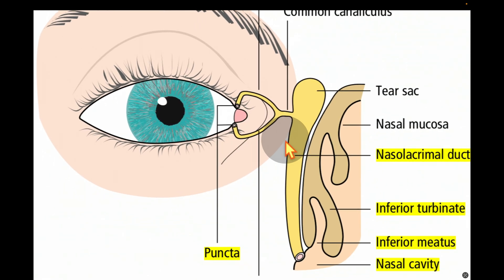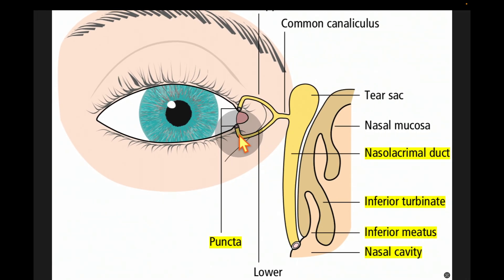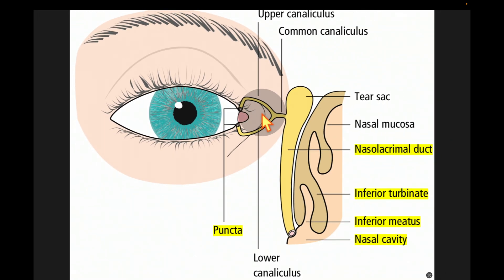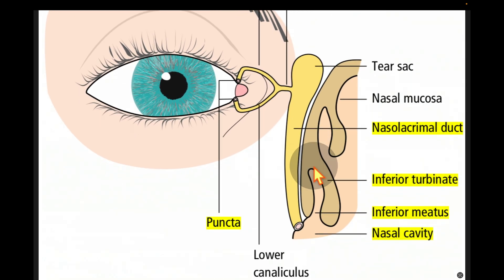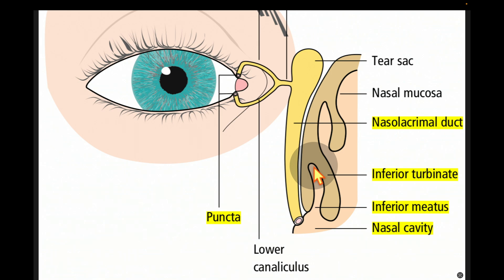The lacrimal drainage system works as follows: tears drain into the puncta, then into the upper and lower canaliculi, into the common canaliculus, then into the tear sac, and finally into the nasolacrimal duct. An important clinical point is that congenital nasolacrimal duct obstruction is due to failure of canalization of the distal part of the nasolacrimal duct.